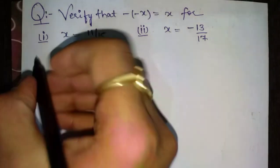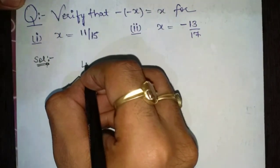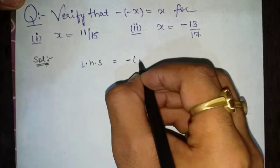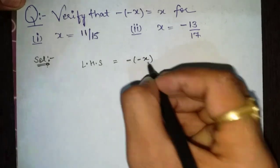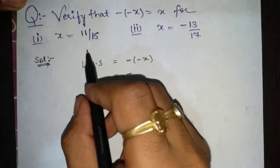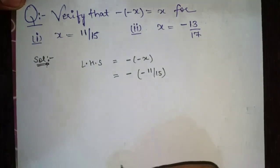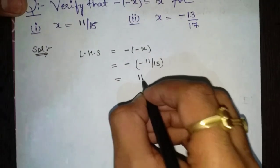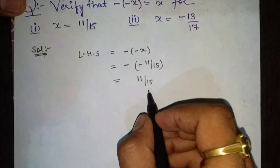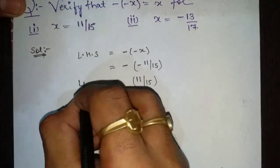Now we solve this sum. First we take left hand side. Left hand side is equal to minus bracket open minus x, which is minus of minus 11 by 15. So minus minus gives plus, and the answer is 11 by 15. This is the left hand side.